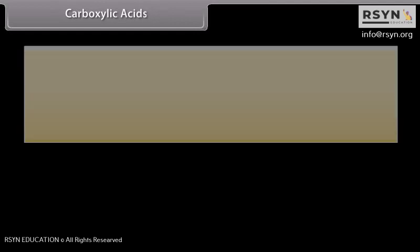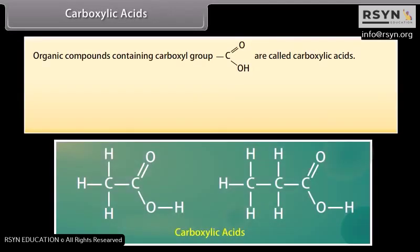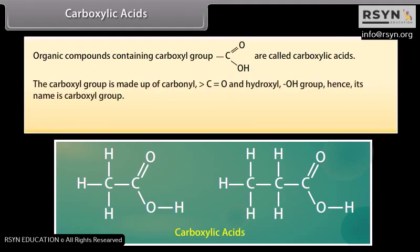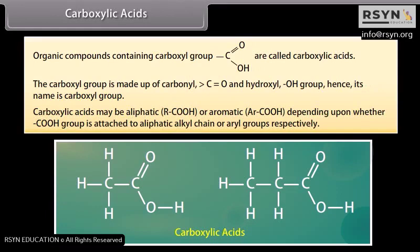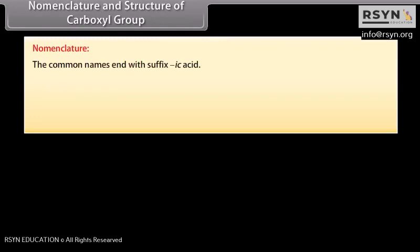Carboxylic acids: organic compounds containing carboxylic group are called carboxylic acids. The carboxyl group is made up of carbonyl and hydroxyl groups, hence its name is carboxyl group. Carboxylic acids may be aliphatic or aromatic depending upon whether the carboxyl group is attached to an aliphatic alkyl chain or aryl groups respectively.